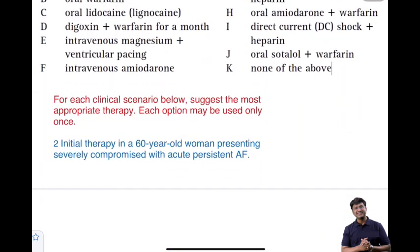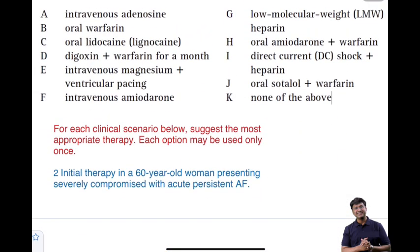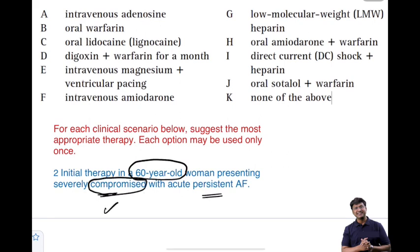The second important clinical scenario is initial therapy in a 60-year-old woman presenting severely compromised with acute persistent atrial fibrillation. This point is very important — she is severely compromised. Remember, in any form of arrhythmia, if the individual is hemodynamically unstable or severely compromised, the first-line treatment should be DC shock.